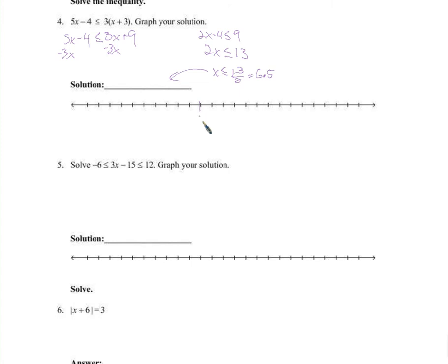On the number line: 0, 1, 2, 3, 4, 5, 6 and a half. It needs to be less than or equal to 6.5, so we fill in a solid circle since it can be equal to it, and indicate all the points to the left of that.